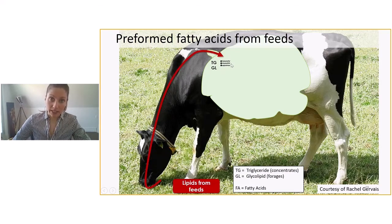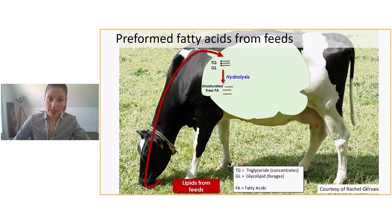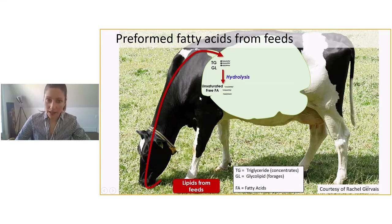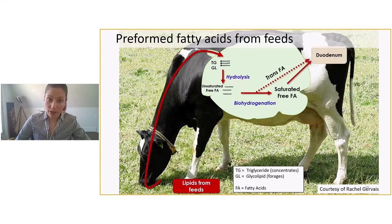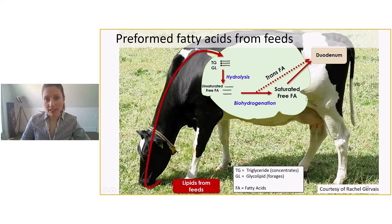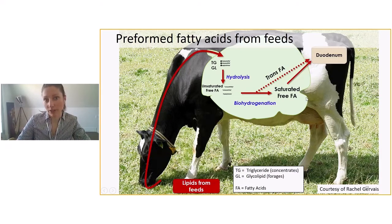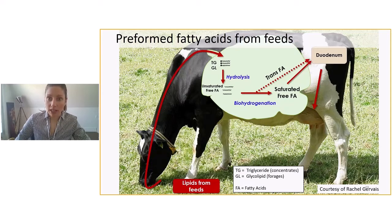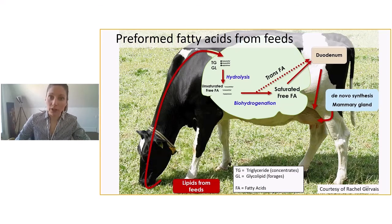The first step in the rumen is hydrolysis. During this step, the fatty acids will be detached from the glycerol and become free fatty acids in the rumen. The second step is biohydrogenation. During this step, the unsaturated fatty acids will become saturated by the attachment of hydrogen to the carbon molecules. These saturated fatty acids will then exit the rumen and move into the intestine, where they will move to the mammary gland where the synthesis of de novo will occur.